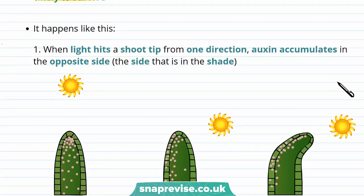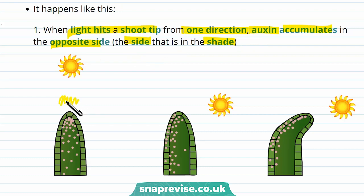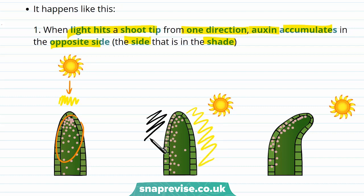The first step in positive phototropism is that when light hits the shoot tip from one direction, auxin accumulates on the opposite side — the side that's in the shade. This means if the sun is directly above the plant and hits the centre of the shoot, the plant won't grow to either side, because auxin is evenly distributed around the shoot tip and all cells elongate equally. If the sun is on one side of the shoot, one side is in the light and the other is in the shade.